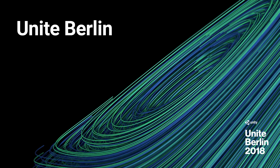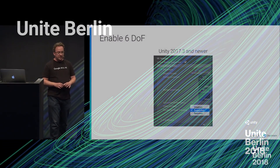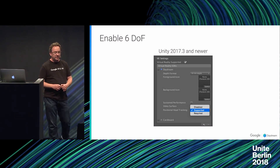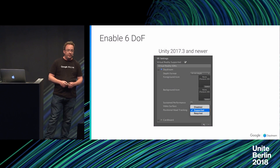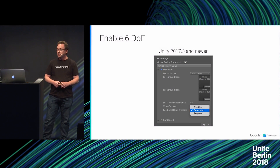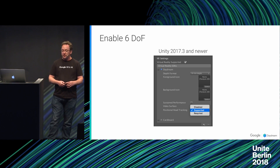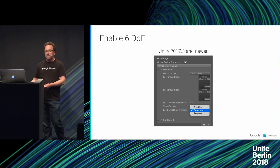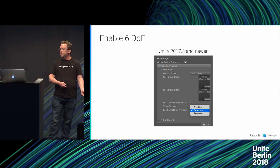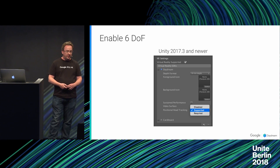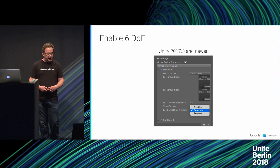Enabling six degrees of freedom in Unity is as simple as getting Unity 2017.3 or newer — it's enabled by default in these newer versions. Should you want to specify that your app is not ready for 6DOF or doesn't support 3DOF anymore, this can be specified in the player settings under XR settings.